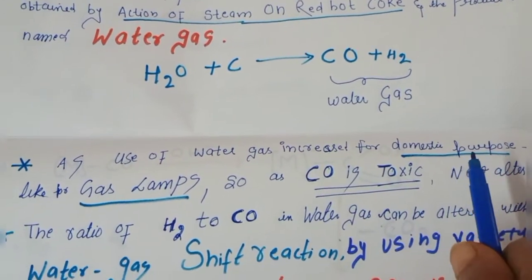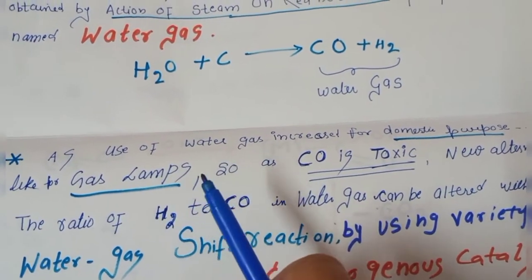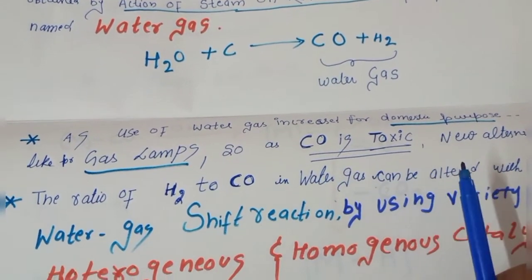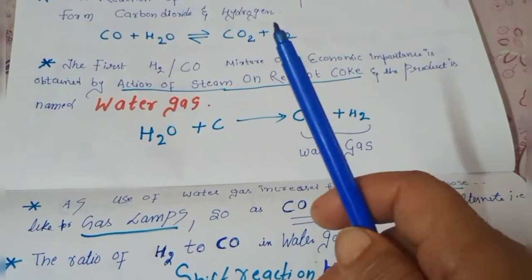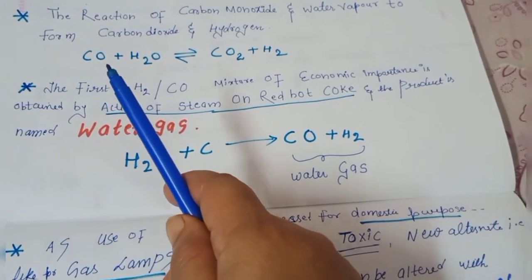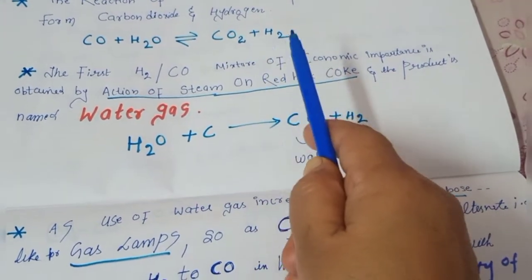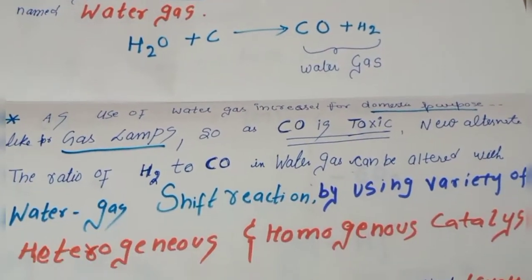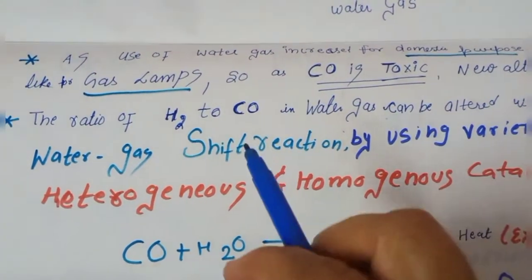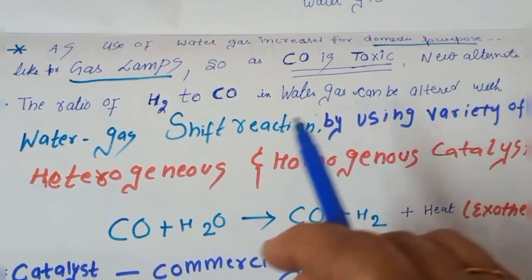As the use of the water gas increased for domestic purposes, means they were also using this gas for lamps and it was very toxic, so they found some new alternative. That is the reaction of carbon monoxide and water to get hydrogen gas and carbon dioxide will be removed. The ratio of hydrogen to carbon monoxide in water gas can be altered in water gas shift reaction by using a variety of heterogeneous and homogeneous catalysts.